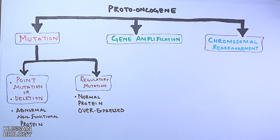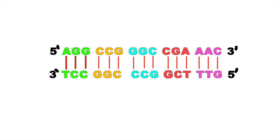Looking at the point mutation through animation, it all happens at the DNA level. Let's say we have a DNA molecule with one base mismatched pair — here, guanine is replaced with adenine. This base mismatch happens during DNA replication and continues to remain within the strand when DNA repair is compromised. So now instead of guanine we have adenine.